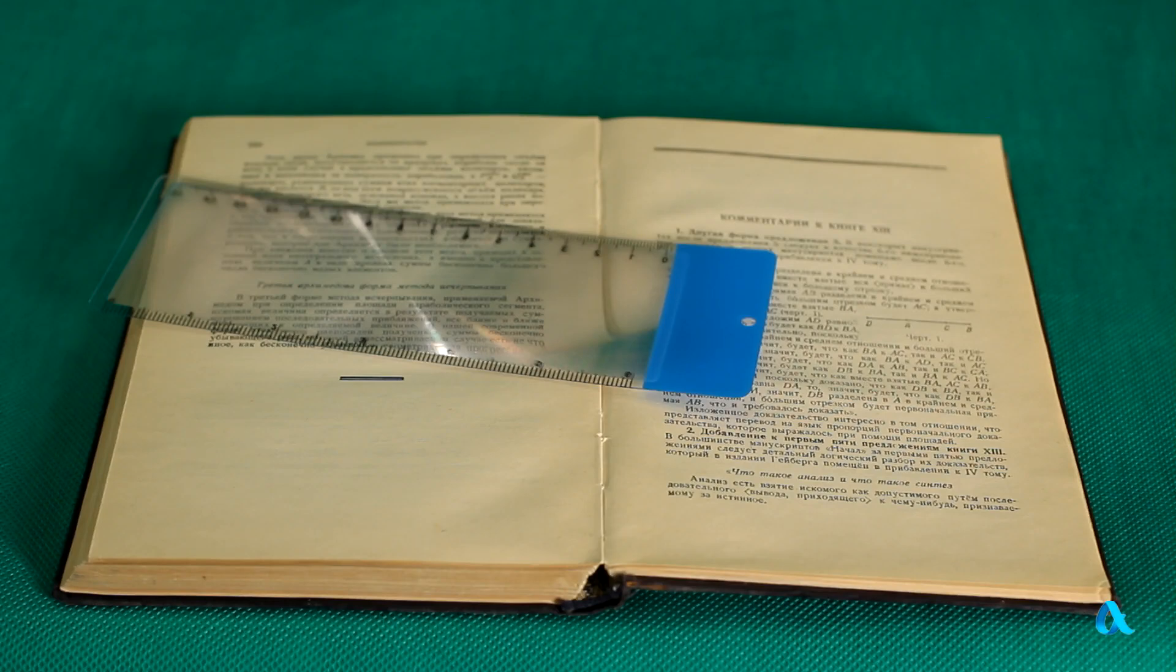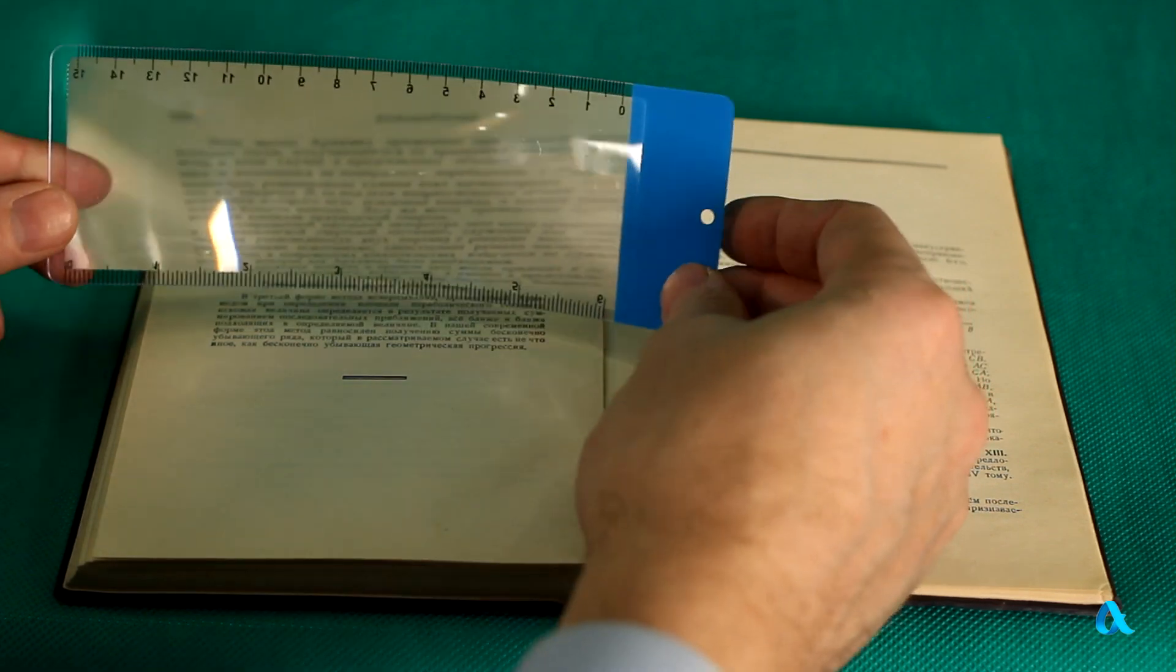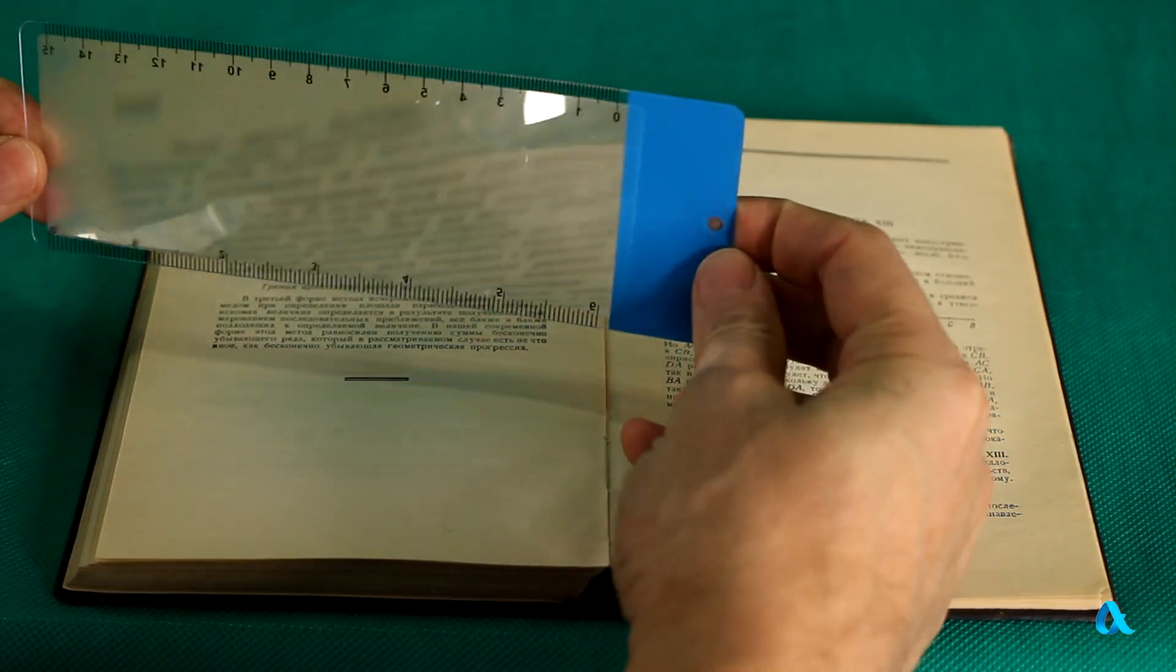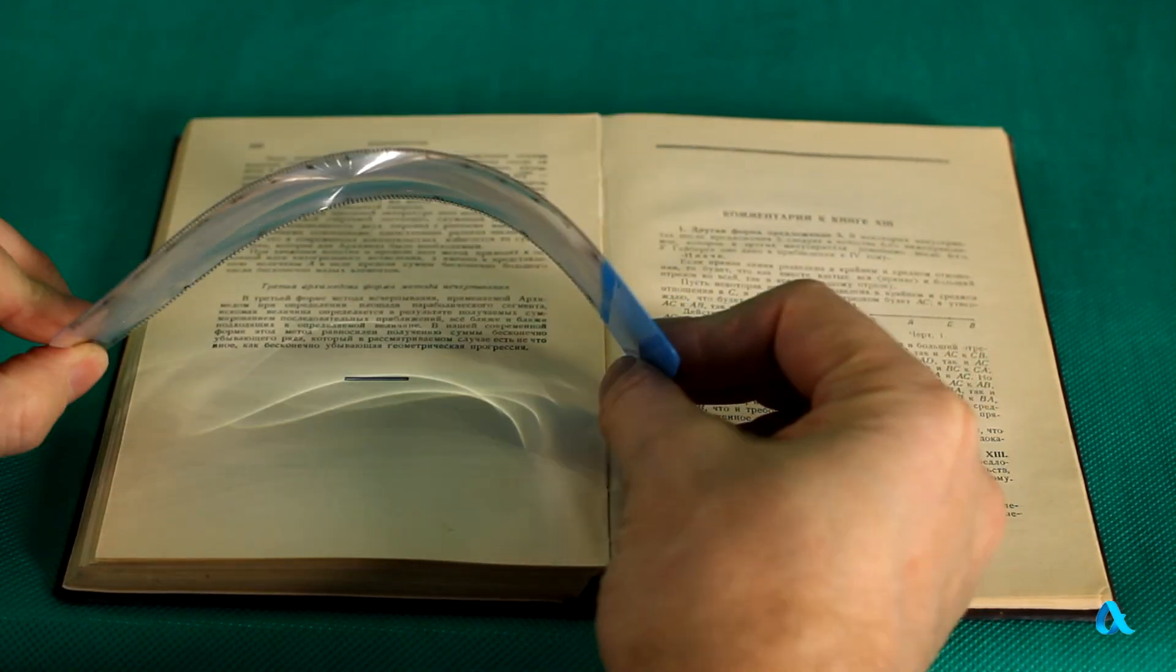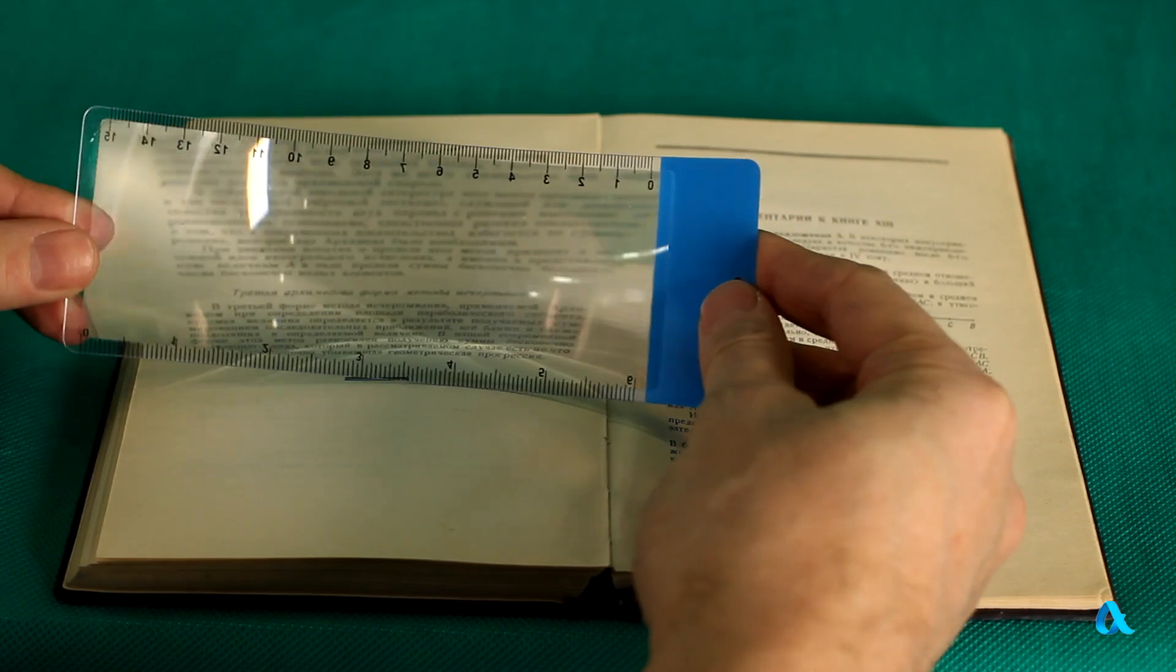We bought this reading magnifier from a vendor on a train. It's a thin and flexible plastic plate. It may be used as a bookmark. This device is called Fresnel lens after its inventor.